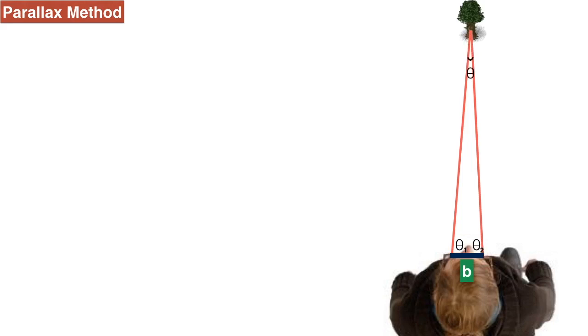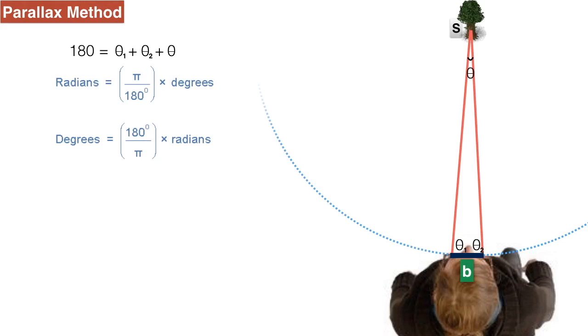Then with the help of simple geometry we can easily calculate angle theta. But make sure that it should be in terms of radians. Now take S as a center and consider a circle such that distance between my subject and the observer should be the radius of that circle.